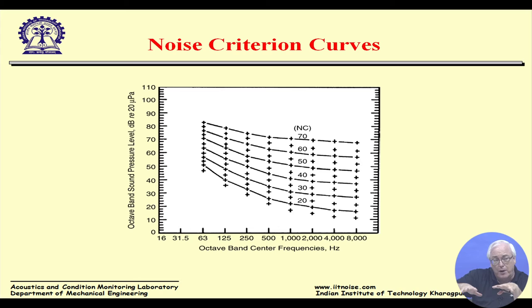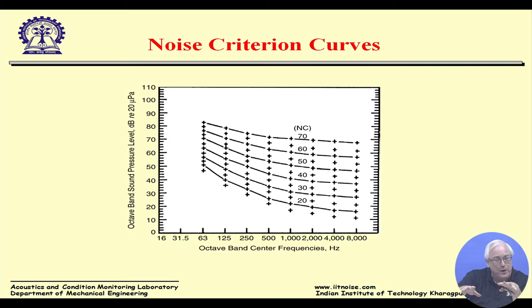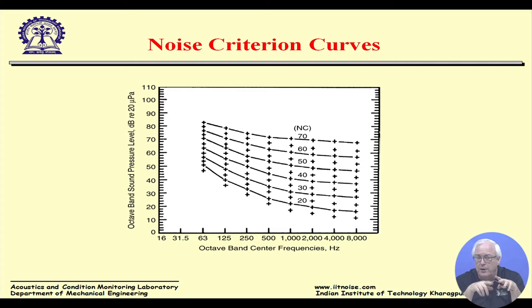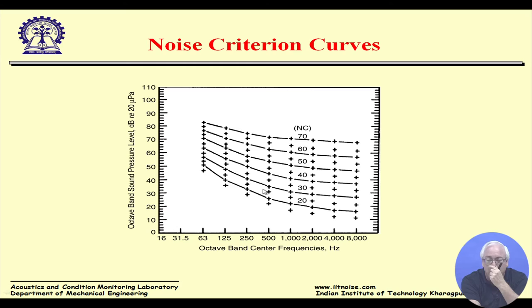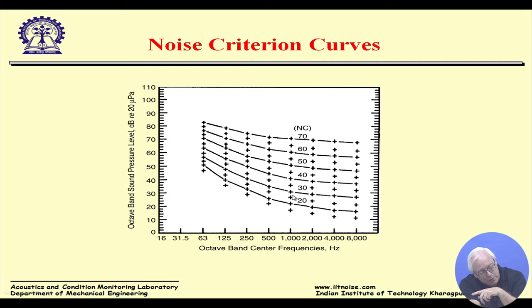The NC curves — Noise Criterion curves — are similar to A-weighting curves: relatively high at low frequencies (63 Hz) and falling at high frequencies. This reflects that humans are not very sensitive to low-frequency sound, so relatively high levels of low-frequency background noise are acceptable. To estimate the noise criteria of a space, you measure the space-average background noise using microphones under normal operating conditions, then plot full octave band sound levels on the NC curves page.